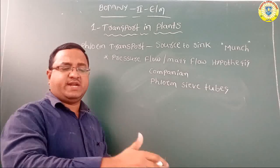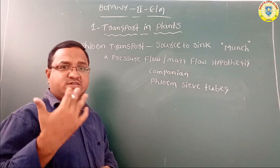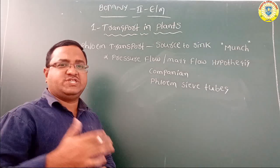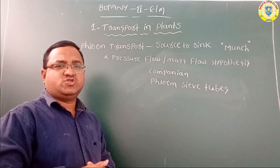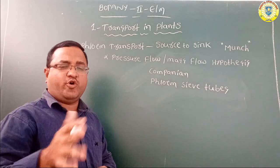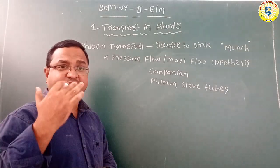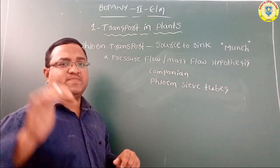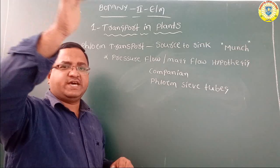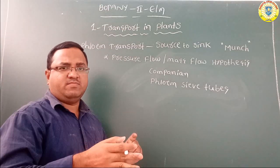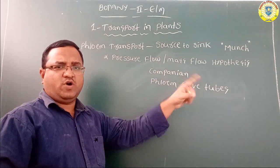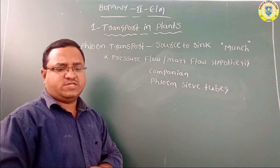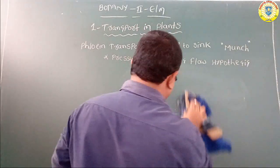Active transport is necessary for movement of sucrose into the phloem sieve tubes. The sucrose from the sieve tubes enters into the sink cells. By utilizing these sugars, the sink cells can produce energy, starch, and cellulose. As sucrose moves out of the phloem, the pressure is reduced and water moves out as well. Finally, from the source, sucrose enters into the sink — this translocation is called the pressure flow or mass flow hypothesis.